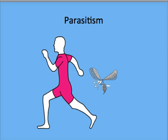Parasitism is a situation in which one species benefits and in doing so harms another. For example, fleas, viruses, and mosquitoes.